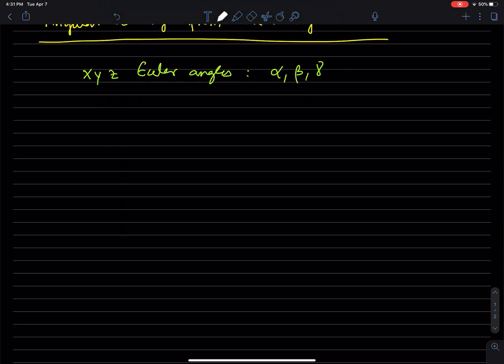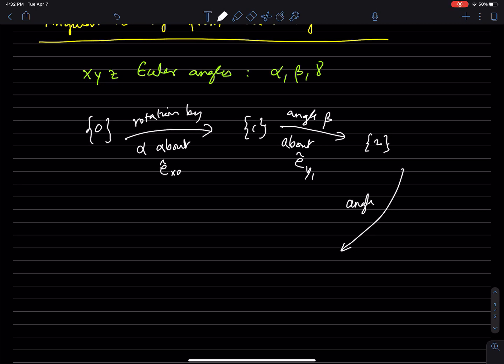So let's say we have frame 0, 1, 2. Rotation by alpha about e_x0, so let's just write that angle beta about e_y1, and then you get 2, and angle gamma about e_z2, to get 3.